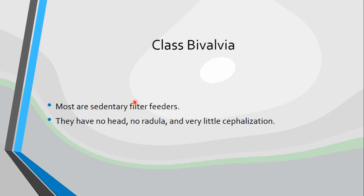Most bivalves are sedentary and they are filter feeders. Sedentary means that they stay in one spot — they're anchored to the bottom and they do not move. And filter feeder means that they actually filter their food right out of the water. They have no head, they have no radula, and they have very little cephalization. Cephalization means a collection of sensory organs in one end of the body — which for us would be our head. Our main sensory organs are almost all located in our head: our sense of hearing, sense of equilibrium, our sense of smell, sense of taste, and our sense of vision, all within our head. And that is what cephalization is.